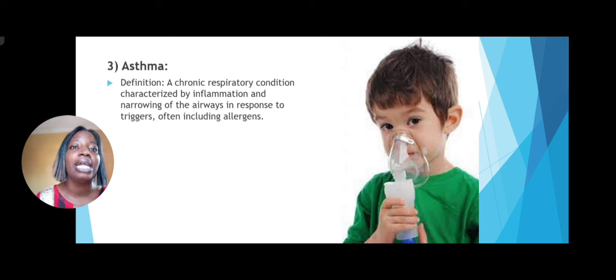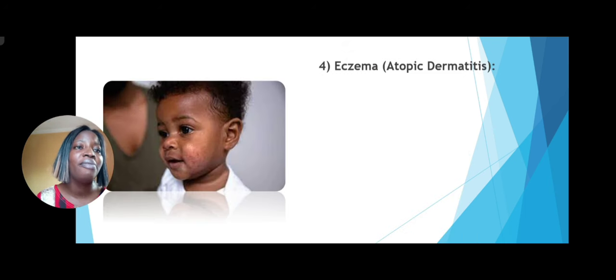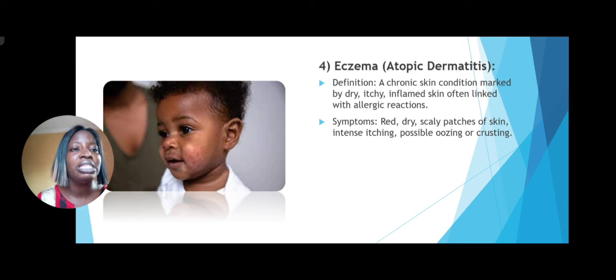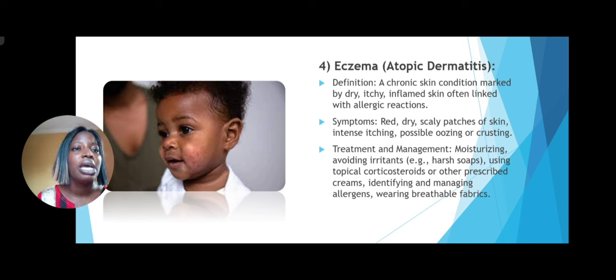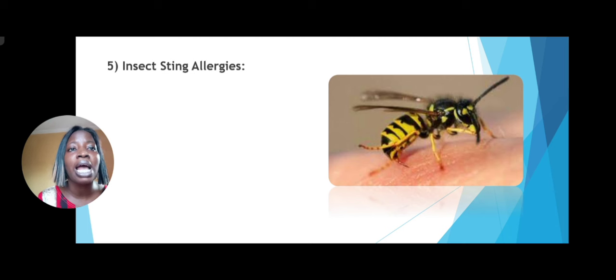We have already looked at asthma, which is also caused by allergens, and we have controller medications such as rescue inhalers that can help the child to breathe. Then we have atopic dermatitis, which is eczema — a chronic skin condition marked by dry and inflamed skin. Symptoms include intense itching and possible oozing or crusting. Treatment is usually through moisturizing and avoiding irritants such as harsh soaps, so you have to be particularly careful when using soaps — that's why baby soaps are recommended.